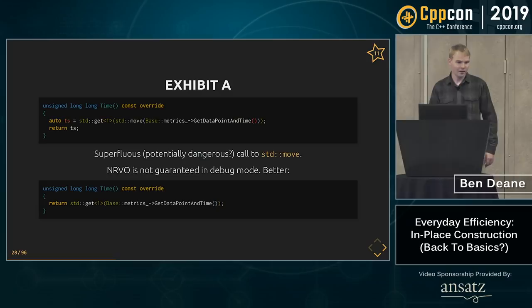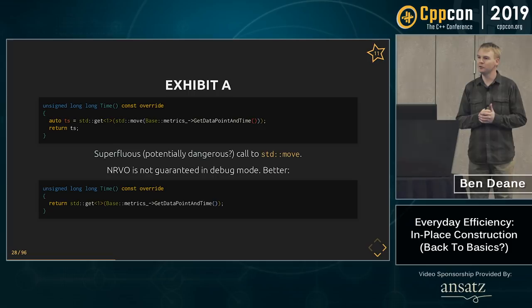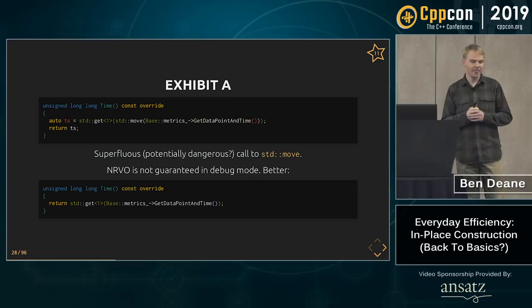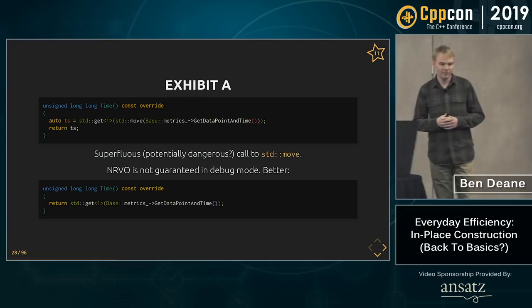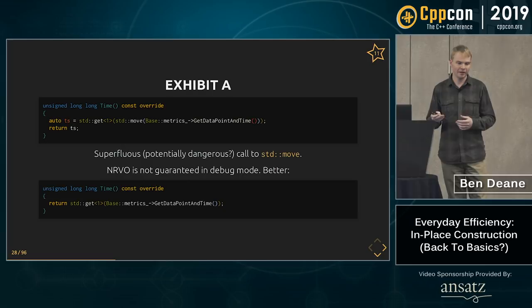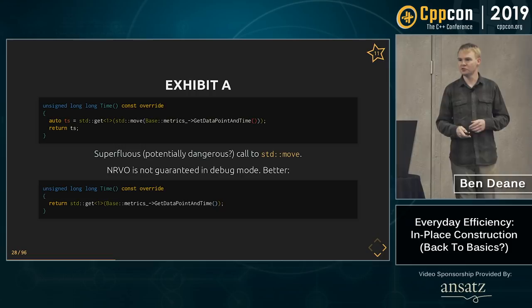I told you I saw lots of code really trying to take advantage of this. Here's code that really tries its best to get efficiency but is doing too much — it's applying std::move to the result of a function call. That's an rvalue anyway, and it could be more simply rewritten as just returning the result of the function — in fact, std::get of the result of the function.